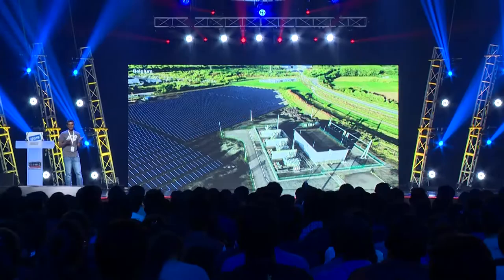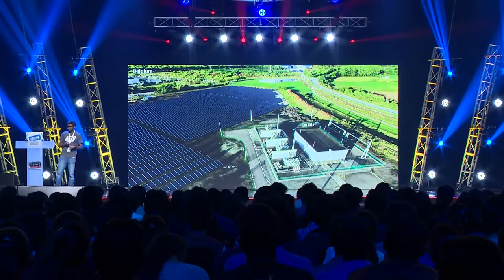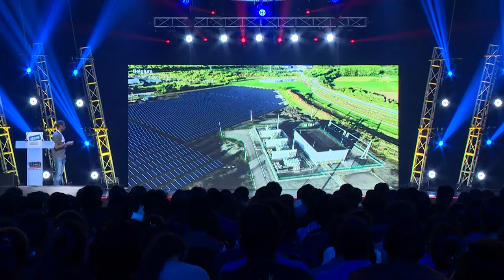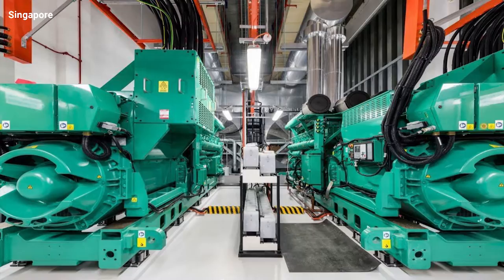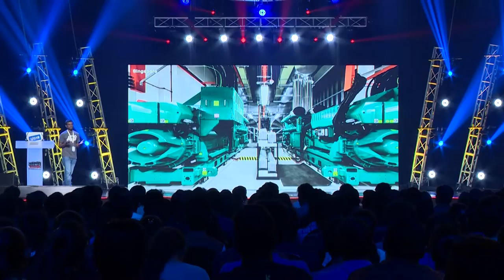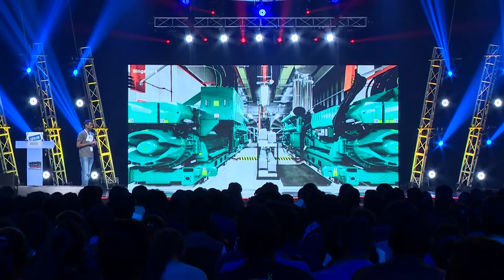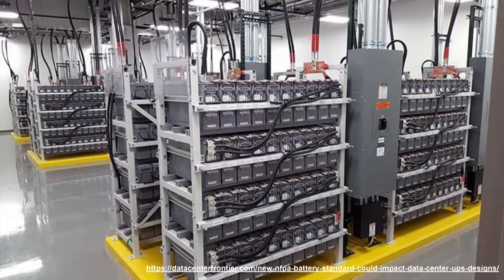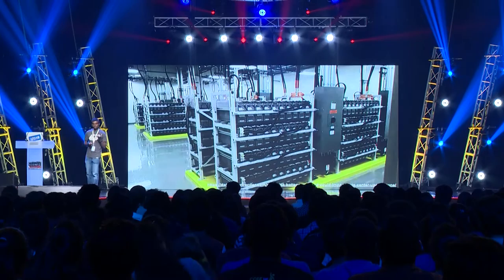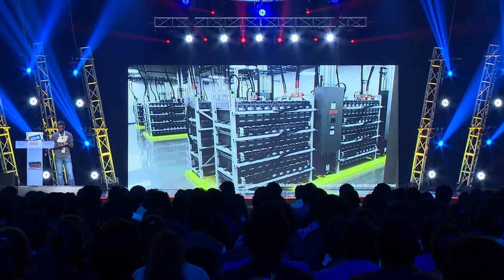Some data centers are strategically located near alternative power sources — the Belgium data center is right next to a huge array of solar panels, and the Netherlands data center had a giant wind turbine nearby. However, all power sources are subject to failure, so you also need backup generators on standby. Generators can keep a data center alive indefinitely as long as you keep refueling them. But in the event of a catastrophic power failure, it could take a few minutes for the generators to kick in, so many data centers use a room full of giant batteries — essentially a UPS for the entire data center — which can keep things alive for 5 to 10 minutes, just enough for generators to kick in, or to allow administrators to initiate a graceful shutdown.